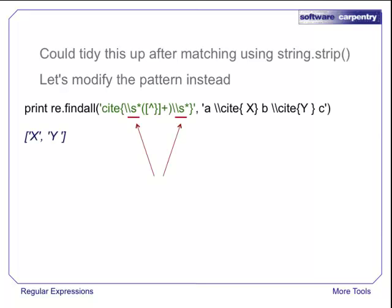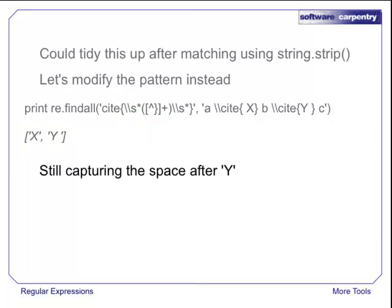This modification solves half our problem. If you recall, backslash lowercase s is an abbreviation for the set of whitespace characters, so these uses of backslash s star match zero or more spaces immediately after the opening curly brace or immediately before the closing one. However, the space after the y is still being returned to the matched text.